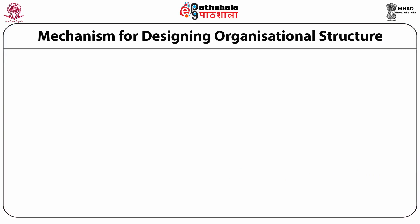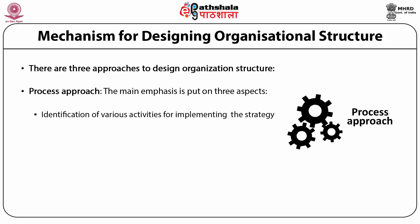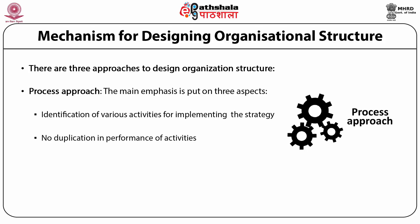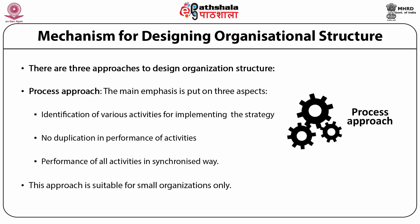When an organization's structure is being planned, there are generally three approaches. The first is the process approach, which puts emphasis on three aspects: the identification of various activities for implementing the strategy, ensuring no duplication in the performance of activities, and that the performance of all activities should be in a synchronized way. This approach is suitable only for small organizations.